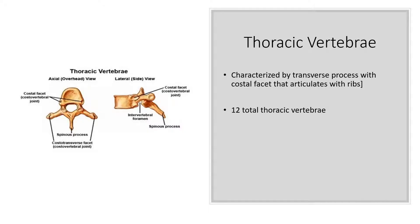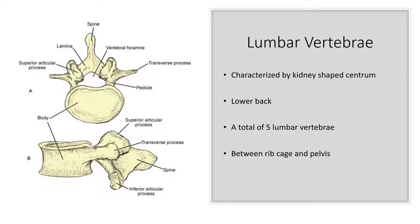The thoracic vertebrae are characterized by a transverse process that has a costal facet that articulates with the ribs. There are 12 total thoracic vertebrae and 12 total pairs of ribs. The lumbar vertebrae are characterized by their kidney-shaped body or centrum. This is your lower back vertebra, and there are a total of five, located between the ribcage and your pelvis.